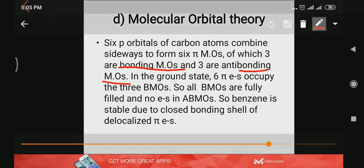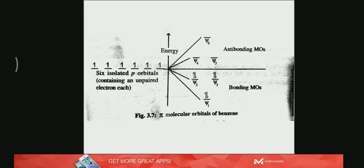Now in each p orbital there is one electron. So how do we fill these electrons? We can take the MO diagram.